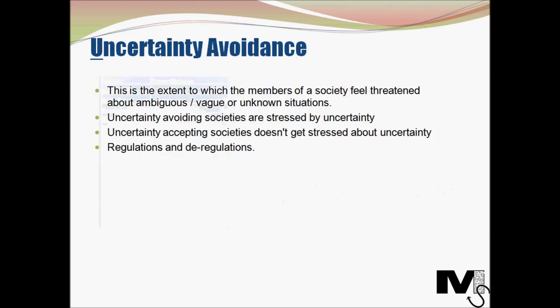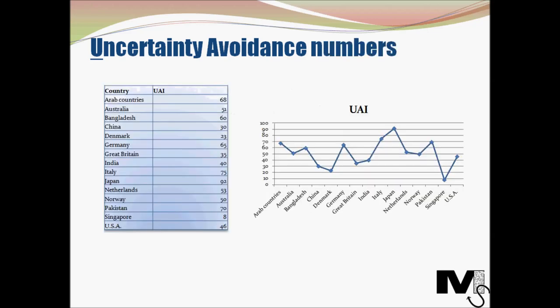The next dimension is uncertainty avoidance — the extent to which members of a society feel threatened by vague, ambiguous, or unknown situations. This isn't about risk avoidance; it's more about situations which are completely unknown and unanticipated. Uncertainty-avoiding societies tend to resist uncertainty and can be very stressed by it, whereas accepting societies treat uncertainty as the norm and don't experience much stress. Avoiding countries tend to be more regulated, while accepting countries tend to be deregulated with fewer rules.